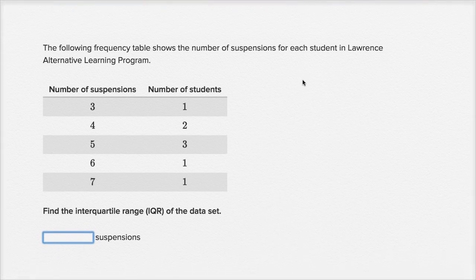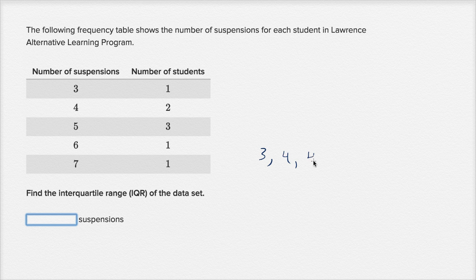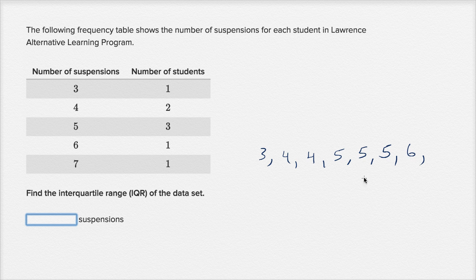Now let's do one more — all of these just have data represented in different ways. The following frequency table shows the number of suspensions for each student in Lawrence Alternative Learning Program. The key here is to write all the data in an ordered list: one student with three suspensions, two students with four suspensions, three students with five suspensions — so five, five, five — one student with six suspensions, and one student with seven suspensions.